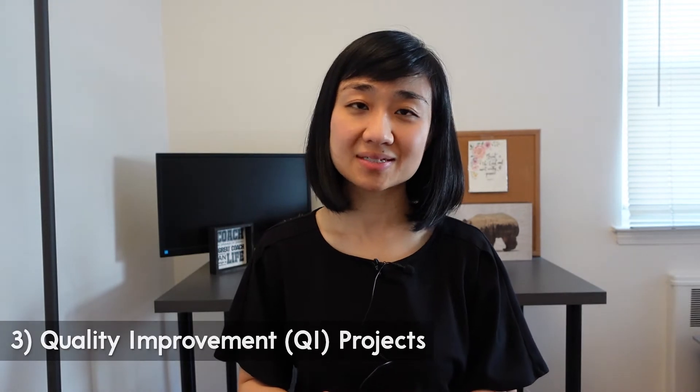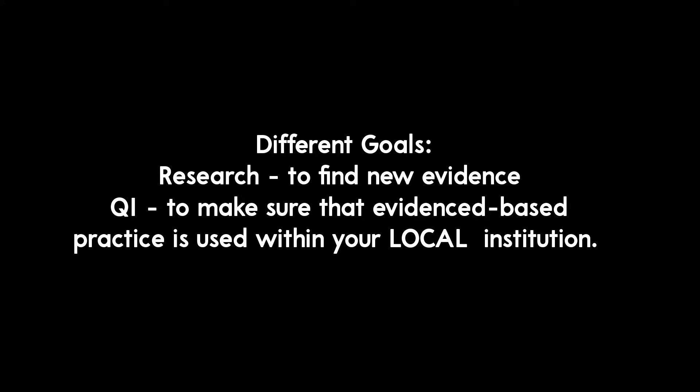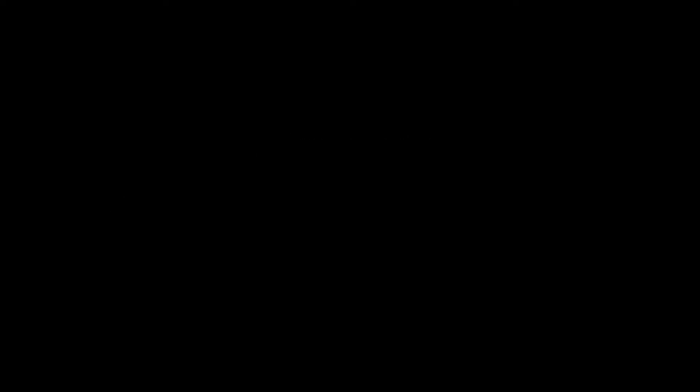Next up: quality improvement projects. Is it human subjects? Yes. Research? No. Why is that? The goal of a research paper is to find new evidence and push the edges, whereas the goal of a quality improvement project is to make sure that evidence-based practice or standard of care is used within your institution. So QI or quality improvement is designed to help your local institution comply with or meet standards of care, and to assess your institution's performance compared to national standards — it is designed to solve a local problem, not outside the institution. Even though you don't need IRB approval for that, I would still recommend that you get a formal determination letter from your institution's IRB.